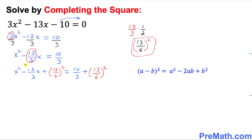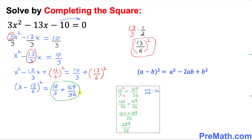Now let's focus on the left-hand side. This represents a complete square using the formula (a − b)² = a² − 2ab + b². So we can write this as (x − 13/6)² equals, on the right-hand side, 10/3 plus 169/36. When you simplify, that becomes 289/36.